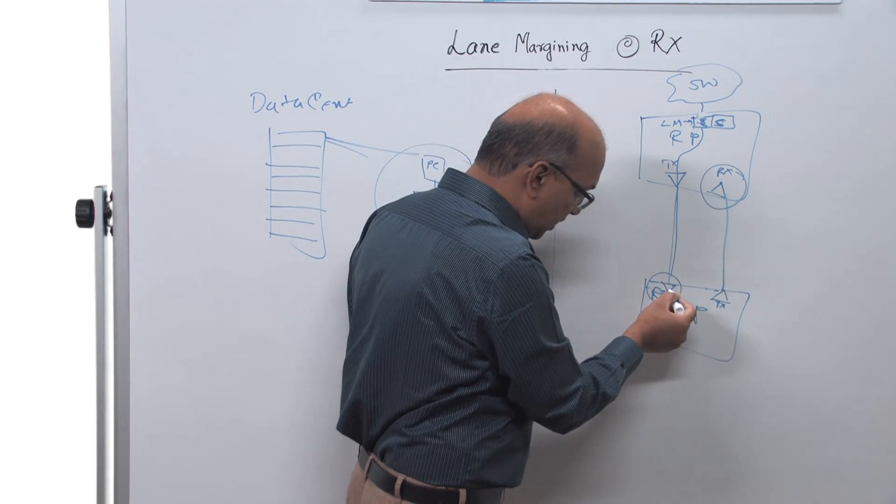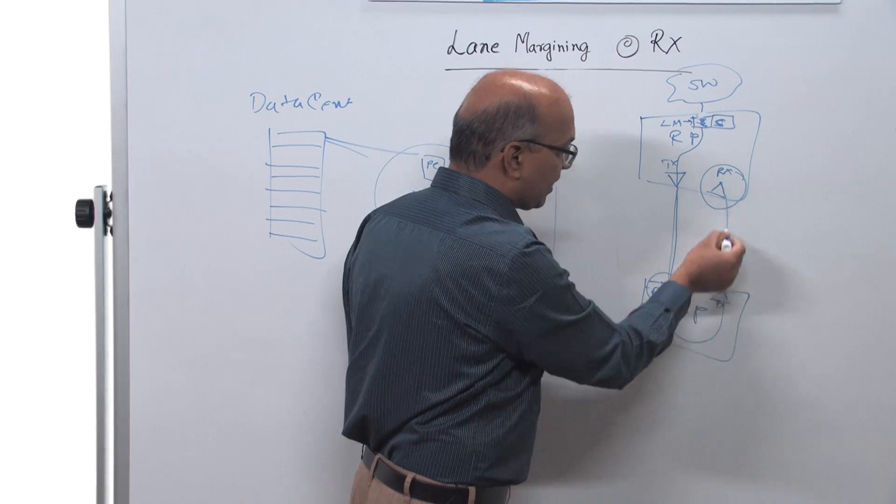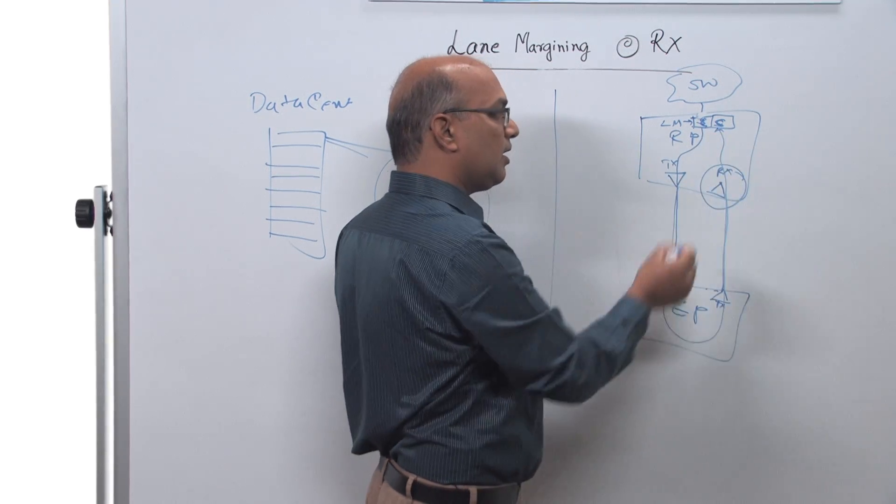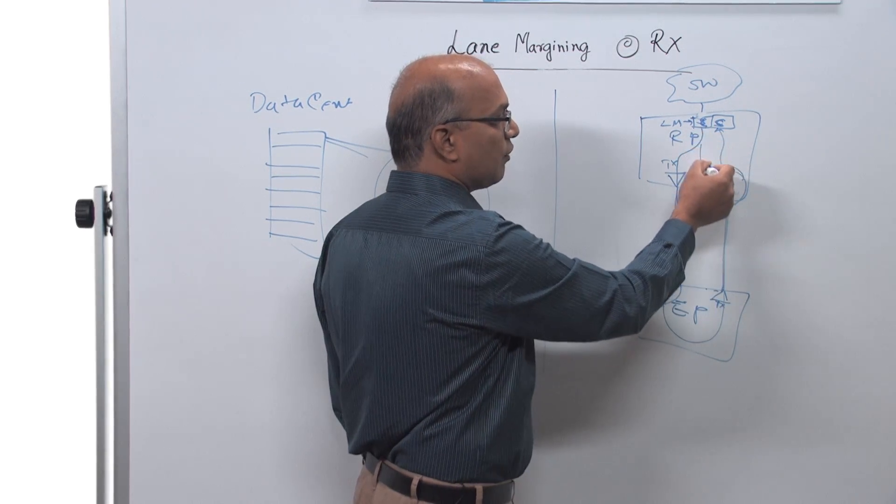This command either flows downward to the receiver which needs to be margined, and the response is sent back upwards to the status. Or it can do the lane margining of its own receivers.